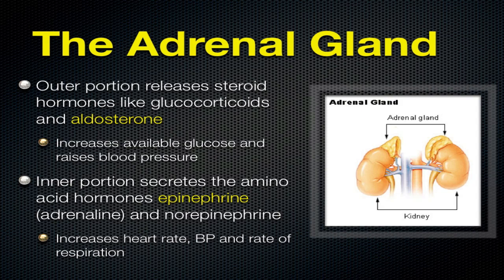What happens if you are constantly stressed out? High blood pressure can develop in people that are constantly stressed out, because the adrenal gland is secreting glucocorticoids, aldosterone, epinephrine, and norepinephrine. Epinephrine is adrenaline. These are speeding things up - increasing heart rate, increasing blood pressure - and if that happens too much, that can cause significant problems.